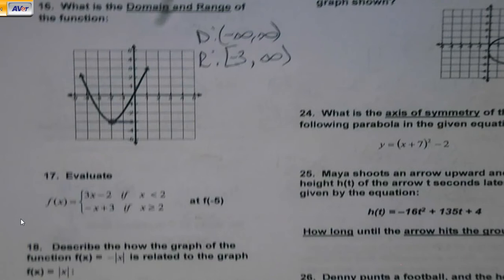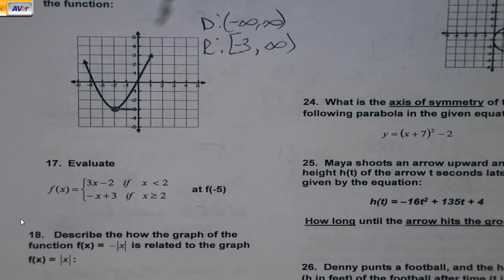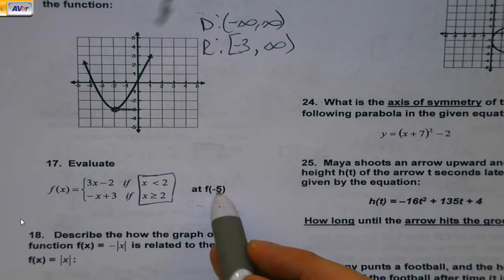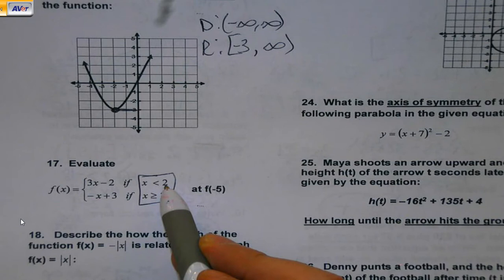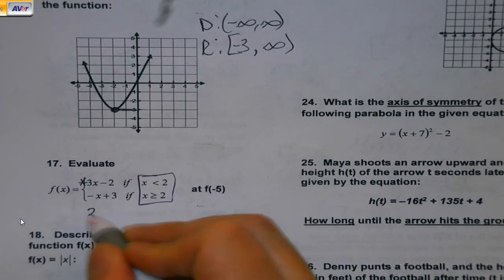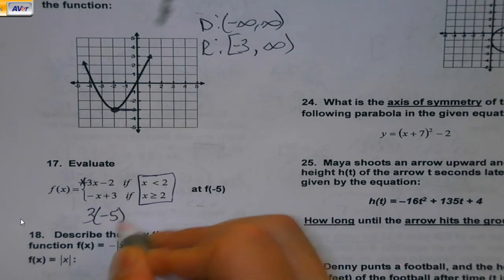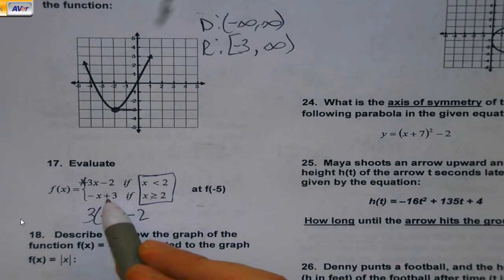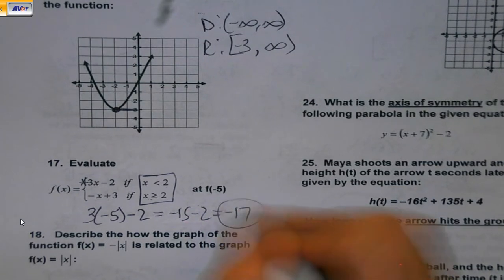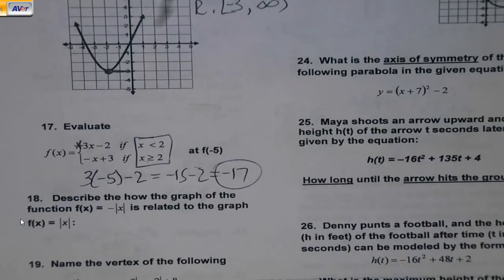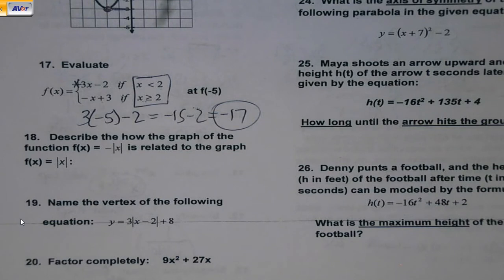Evaluate. This doesn't mean plug the negative 5 into both. We're going to look at the inequalities. Which one is 5 true for? Is negative 5 less than 2? Yes. That means we're going to plug it into the top expression. If it wouldn't have been true, if this one would have been true, we'd have stuck it into the bottom. And I work that out and I get my answer. You're like, man, he's kind of pacing it here. Well, a lot of this stuff is stuff that you've seen before and that you can do. It's just kind of getting you a little bit of a background on some things.